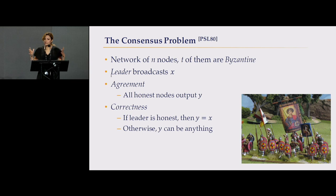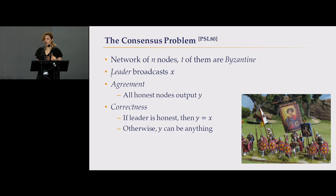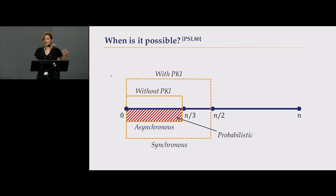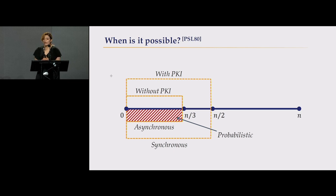This is the basic problem that talks about consensus, and there are different ways of solving it. PBFT was one of the ways. Now, what is possible and what is not possible? Can we solve this problem — is it solvable?